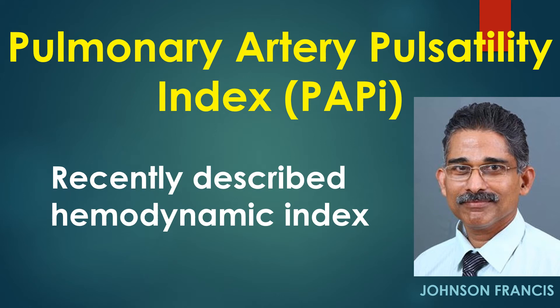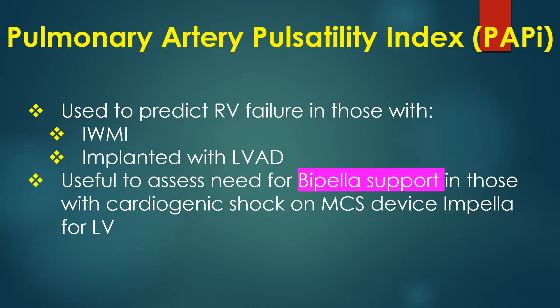Pulmonary artery pulsatility index (PAPI) is a recently described hemodynamic index. It is used to predict right ventricular failure in those with inferior wall infarction and those who have been implanted with a left ventricular assist device. It is also useful to assess the need for biventricular Impella support in those with cardiogenic shock on the mechanical circulatory support device Impella for the left ventricle.